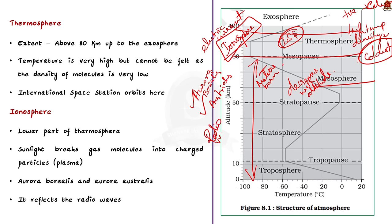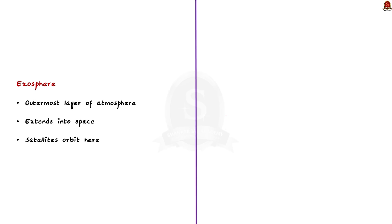Lastly, we have the exosphere, the outermost layer of the atmosphere. It starts from the upper boundary of the thermosphere and extends into space, gradually making a transition into outer space. The satellites orbit the Earth within this layer.